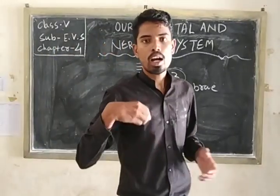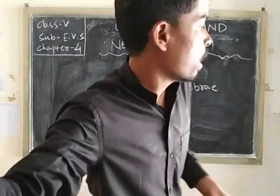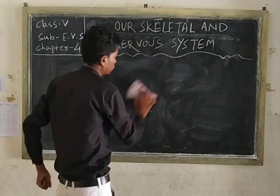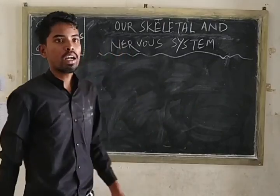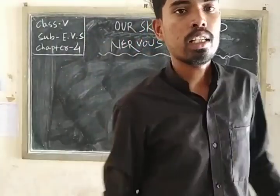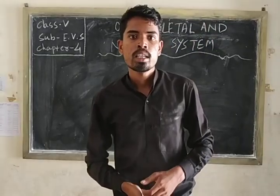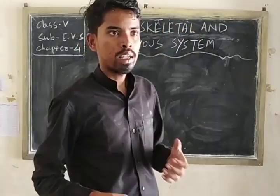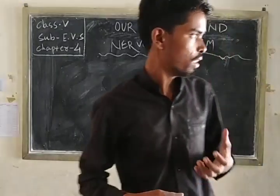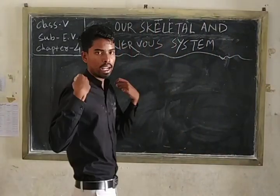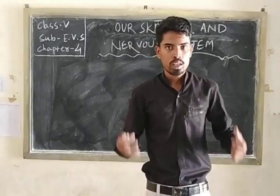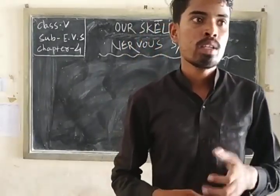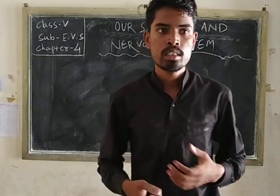Now, coming to limbs. There are two arms and two legs. These four limbs are part of our skeletal system.